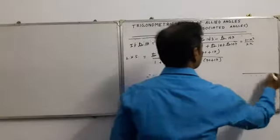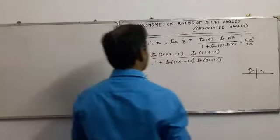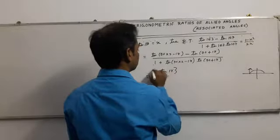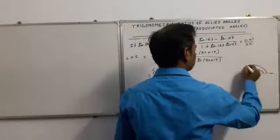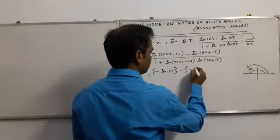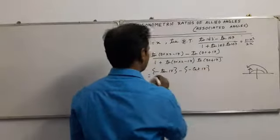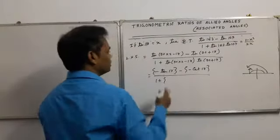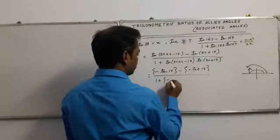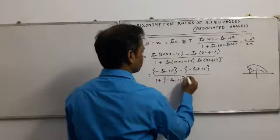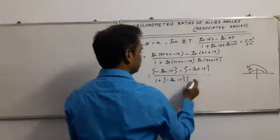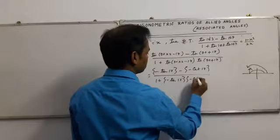tan(180° - 17°) — 180° is an even multiple of 90°, so tan remains tan, and since it is in the second quadrant, tan is negative, giving minus tan 17°. tan(90° + 17°) — 90° is an odd multiple of 90°, so tan changes to cot, and being in the second quadrant it becomes minus cot 17°. In the denominator the same reasoning applies: tan 163° becomes minus tan 17° and tan 107° becomes minus cot 17°.